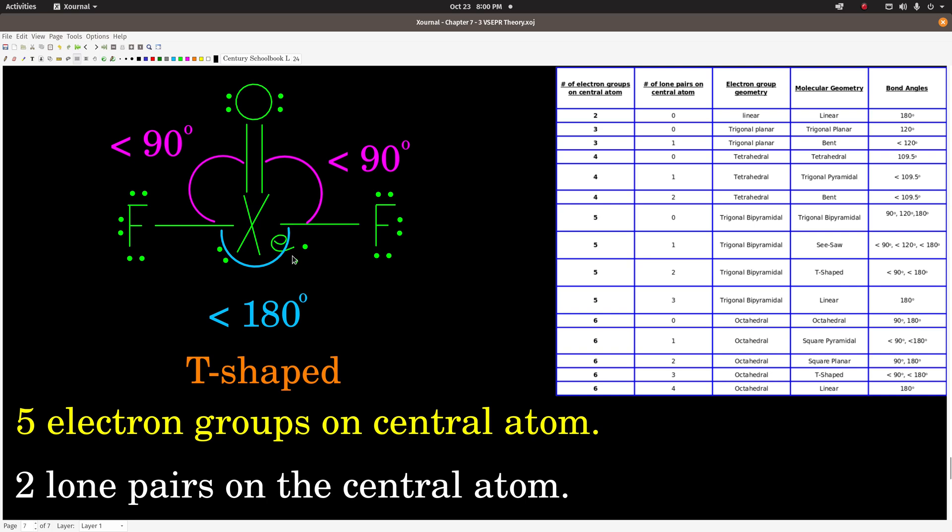So we have five electron groups, one, two lone pairs. So all we do is go over to this table, find the row that says five electron groups, two lone pairs—right here, we're in this row. The electron group geometry is trigonal bipyramidal. The shape, the molecular geometry, is T-shaped. And the bond angles are less than 90 and less than 180.